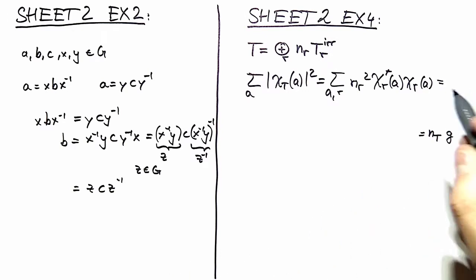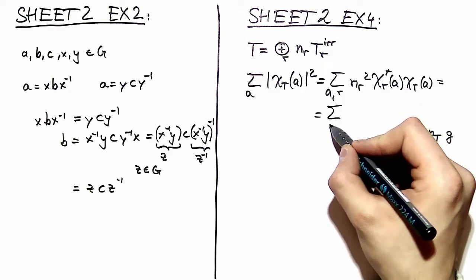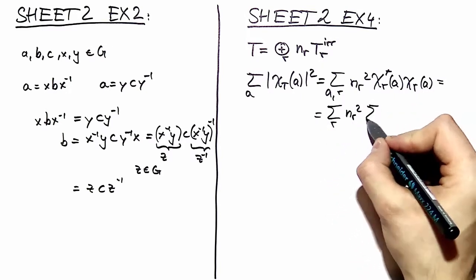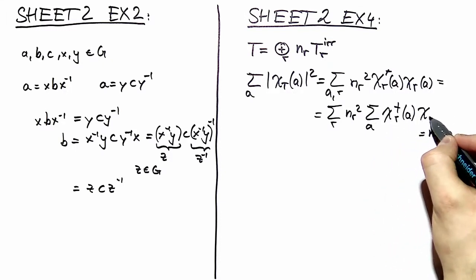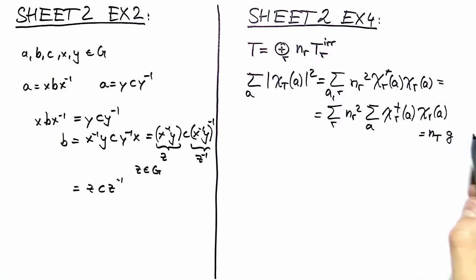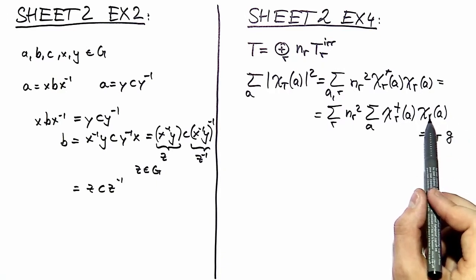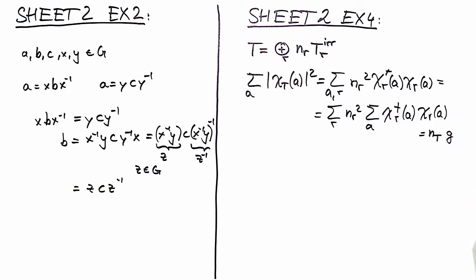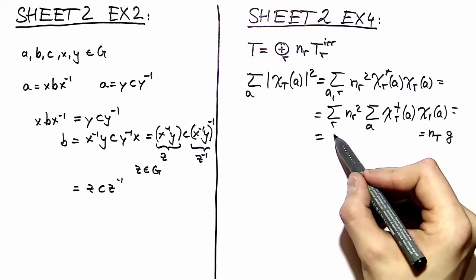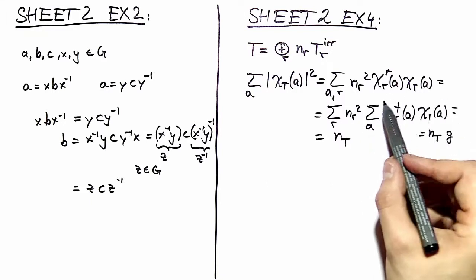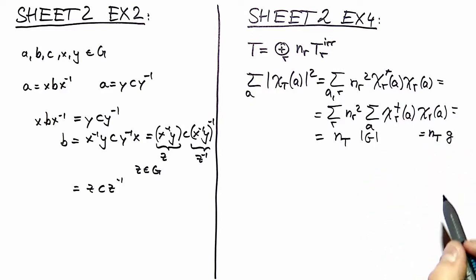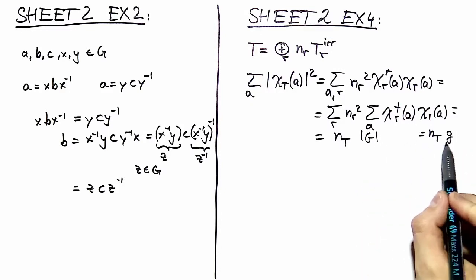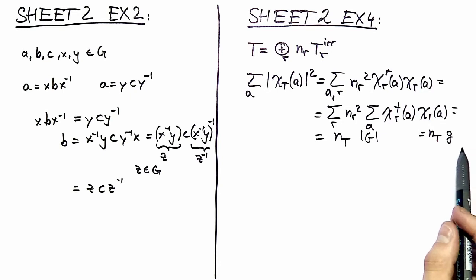Okay, yeah, exactly. It's just splitting up those two sums. We've got n_r squared and we got that sum over a which is the complex conjugate of this character times the usual character, and now all we have is this is by definition n_T, and this is, when we use our orthogonality theorem for characters, just the order of our group, which is by definition our little |G| right here.